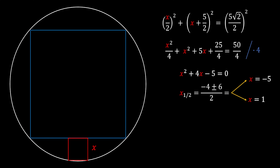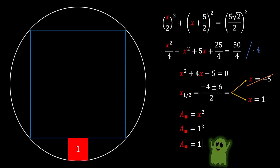Since the side of a square cannot be negative, we discard x = −5. So the side of our red square equals 1. The area is x² = 1² = 1, meaning the area of our red square is 1 square unit — and that is our solution.